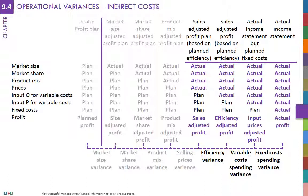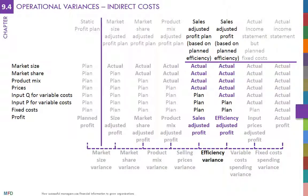The main difference between direct and indirect costs comes in the efficiency variance. For indirect variable costs, the efficiency variance is the difference between the profit plan with all actual results except for indirect costs, and a new profit plan that uses the actual amount of allocation bases rather than the budgeted amount. For instance, if the allocation base for energy is machine hours and the sales-adjusted machine hours was 1,000 but the actual number of hours was 1,200, the energy efficiency variance is 200 hours times the budgeted allocation rate.